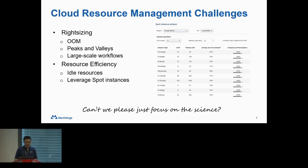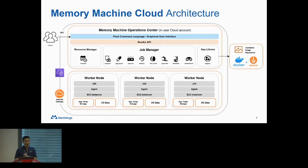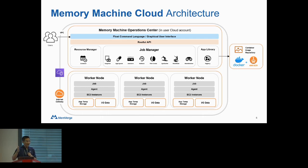So we built a software product to address a lot of these issues, and it's called Memory Machine Cloud. MemVerge started as a company that did a lot of research and development in memory management, and we used a lot of these memory techniques to realize what's needed. Memory Machine Cloud provides a control center that you deploy in your cloud account — a very small machine that becomes the brains behind your cloud operations. It allows you to submit computation jobs, and every time you submit a job, it creates a dedicated worker node. On that worker node, we have an intelligent agent that monitors resource utilization and can take intelligent actions.